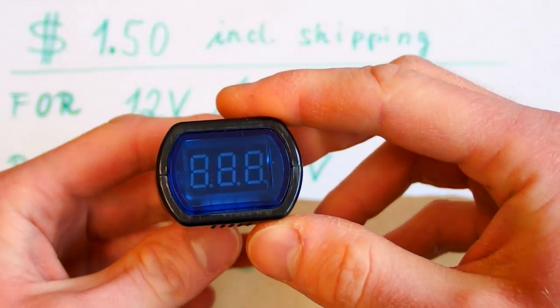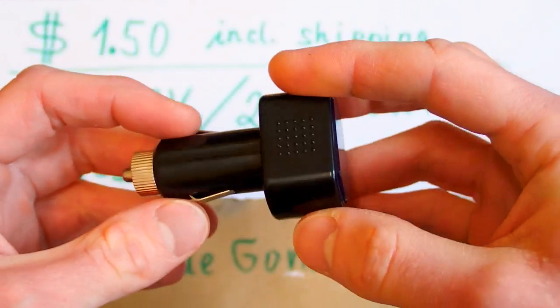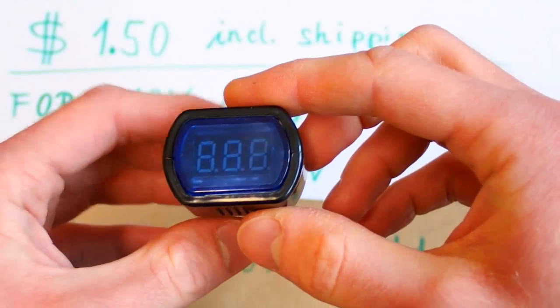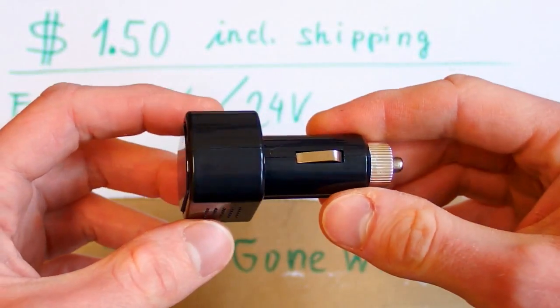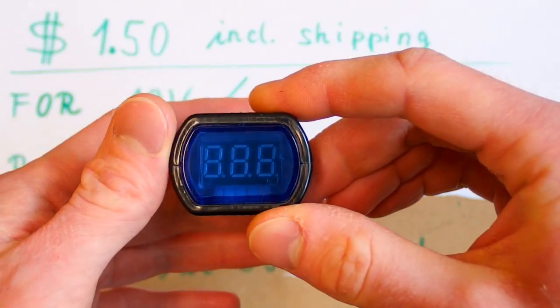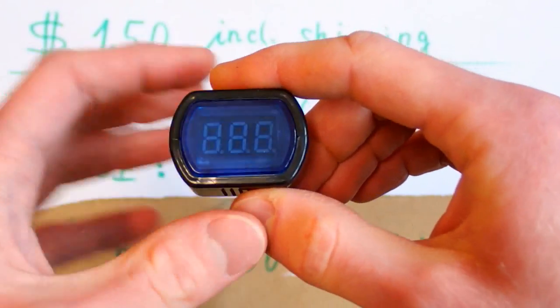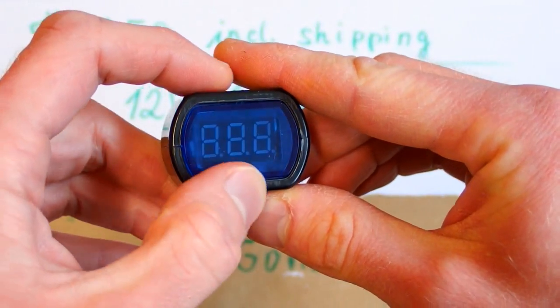This is a very simple but sometimes very useful device. It's a car voltage monitor or meter. It measures the voltage in your car, the voltage of your battery and car mains, and displays it on this LED display.